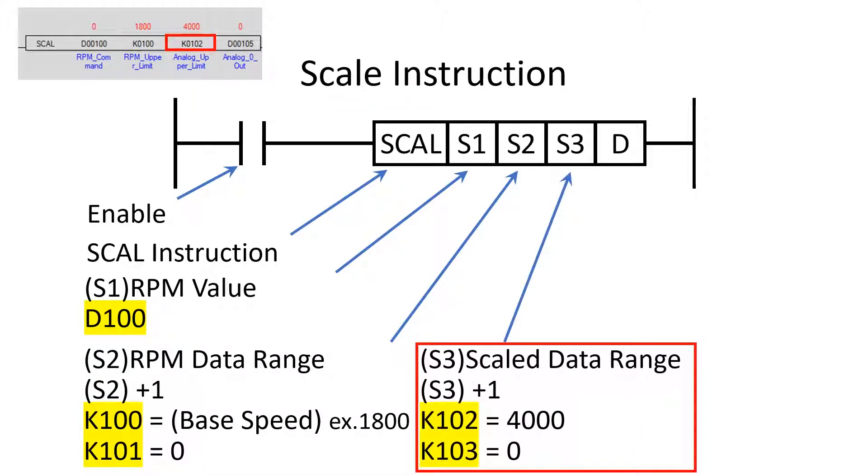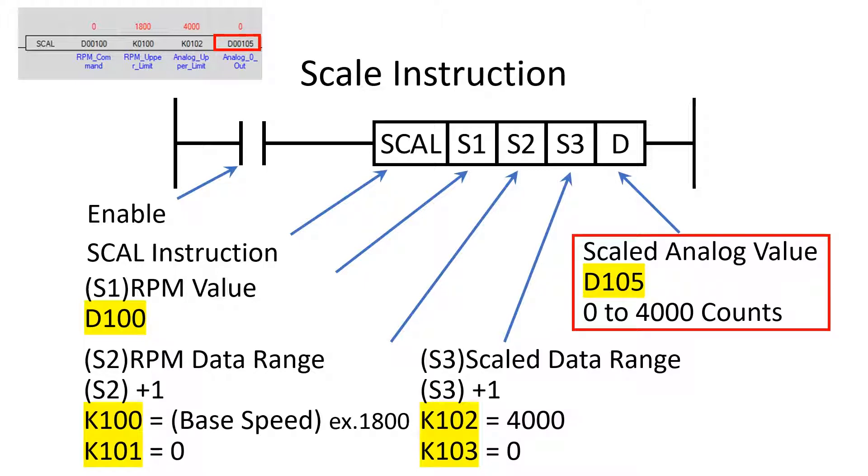The S3 operand stores the scaled range sent to the analog output channel. In this program the scaled range is 0 to 4000 counts which will output 0 to 10 volts from the analog channel. S3 uses two memory locations just as S2. In this program it is K102 and K103 as shown. Operand D stores the scale value for the analog output channel. In this case the analog output count is stored in memory location D105.